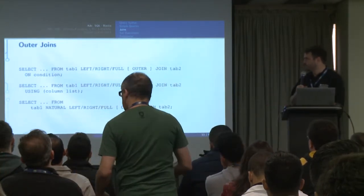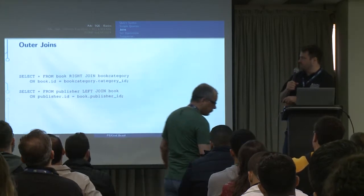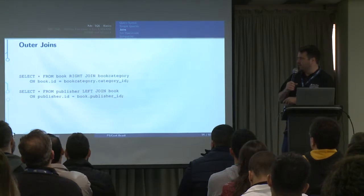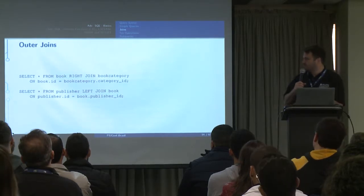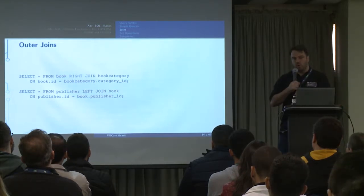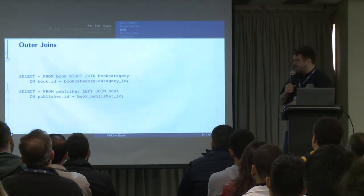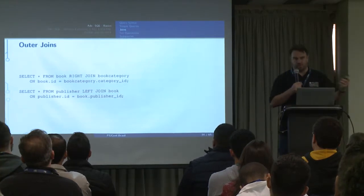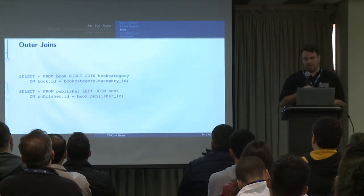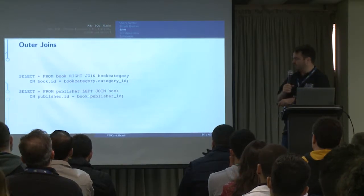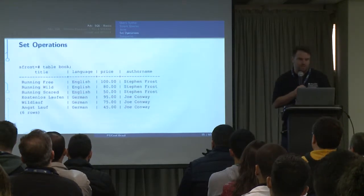OUTER here is a noise word, but you do need to specify if it's left, right, or full. You can have an ON condition and a USING clause. Here's an example giving you all book categories — everything from the book_category table and those entries in the book table that match. If there's a category with no books, it's still listed because it's a right join. Here, all publishers are returned even if they don't have a book, with nulls for any missing book data.